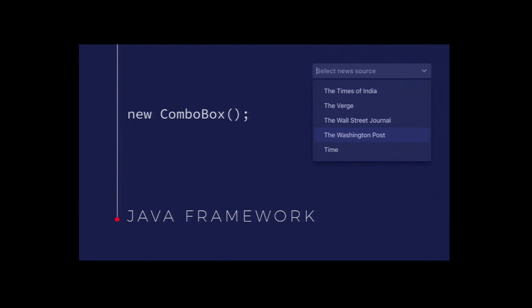Since we're at a Java meetup, we're going to take a look at our Java framework that uses these components. When you use this framework it gives you two things: a Java component-based API, and automated communication between the server and the browser. You don't need to deal with serializing data or requests and responses - you just define in Java how your UI should look and behave and the rest is automated by the framework.